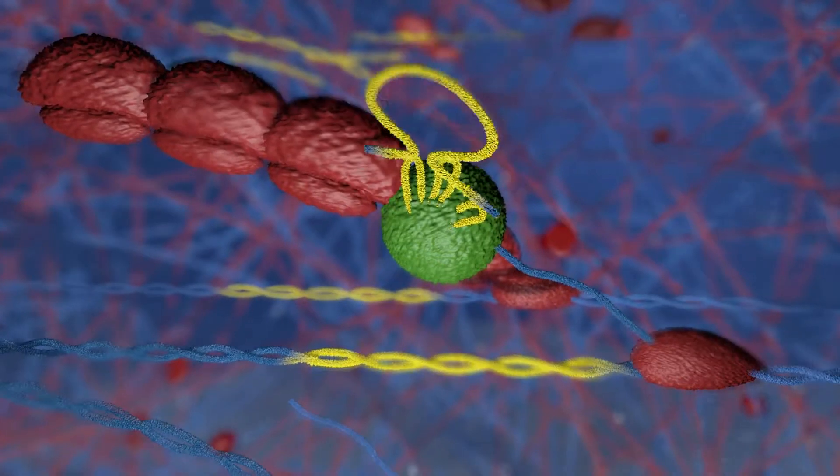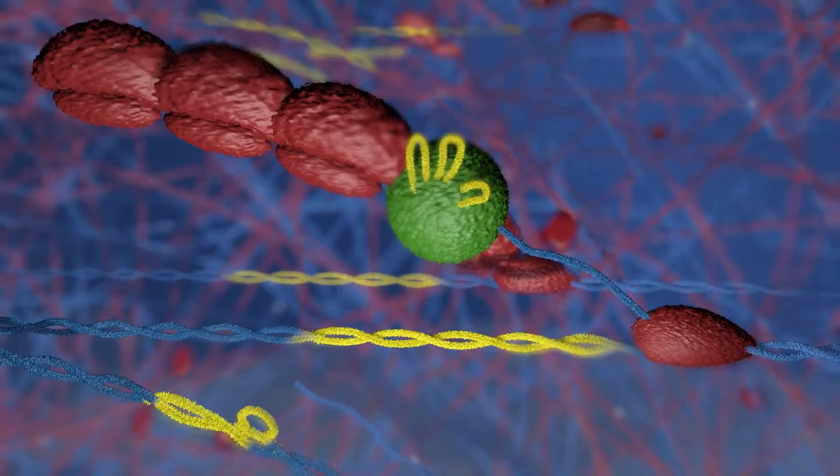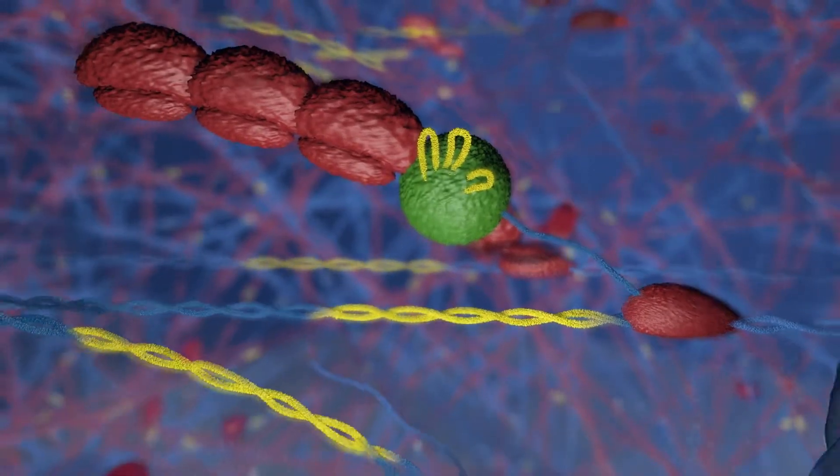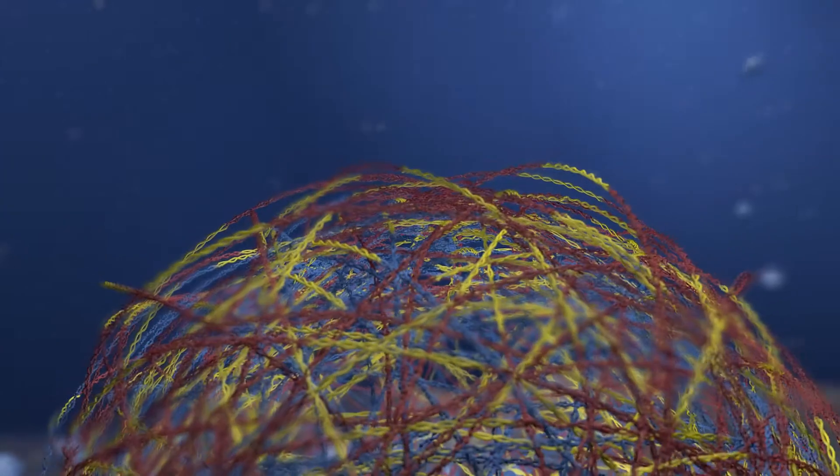One solution would have been to delete all introns, which however did not occur because spliceosomal introns were present in the eukaryote common ancestor. An alternative solution would be the physical separation of splicing from translation.